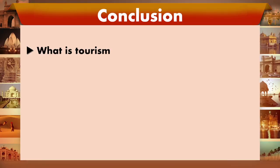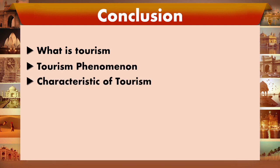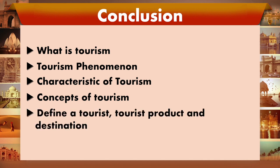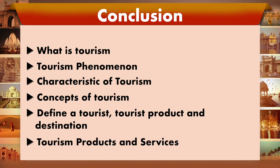In conclusion, today's class covered: what is tourism, who is a tourist, the tourism phenomenon, characteristics of tourism, the concept of tourism, definitions of tourist, tourist products and destinations, and tourism products and services. Tourism products are intangible and perishable in nature. As a tourism student and future tourism professional, you should know the characteristics of tourism, what tourism is, and who a tourist is.